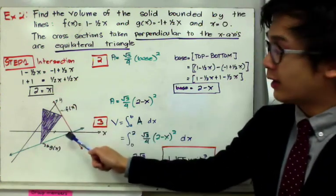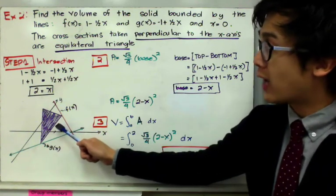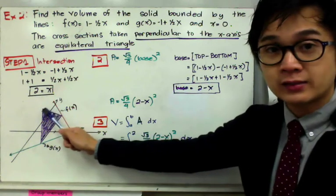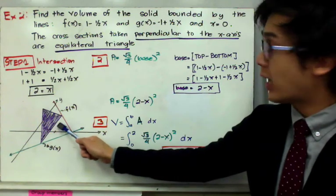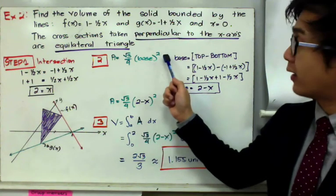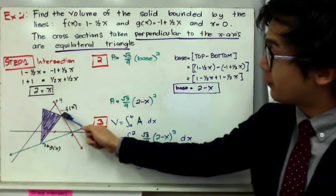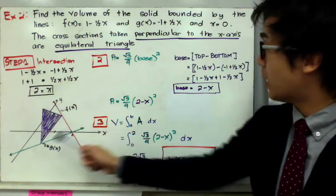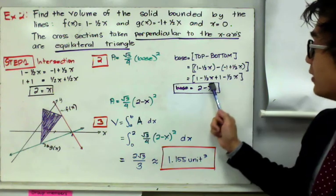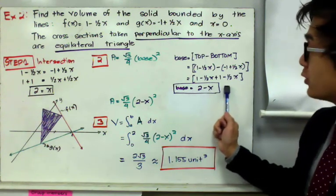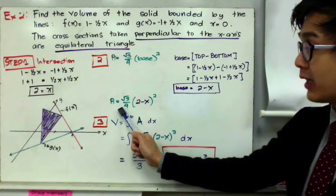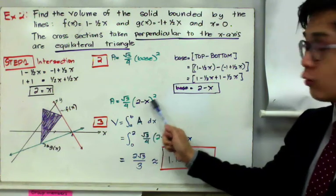Imagine the base is a triangular region and each cross-section is an equilateral triangle. In step two, the area formula for an equilateral triangle is (√3/4) × base². The base of each triangle is top minus bottom: f(x) - g(x) = (1 - ½x) - (-1 + ½x) = 2 - x. So the area function is A = (√3/4)(2 - x)².